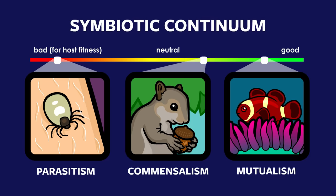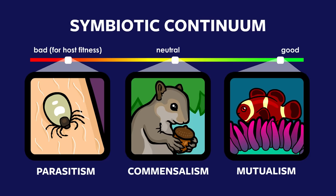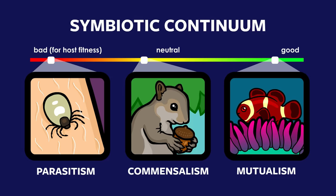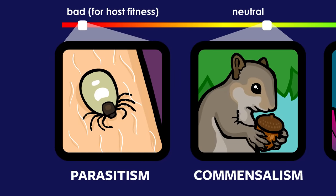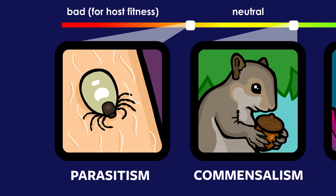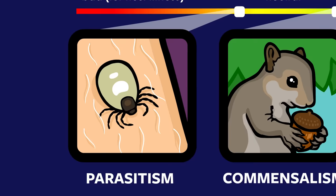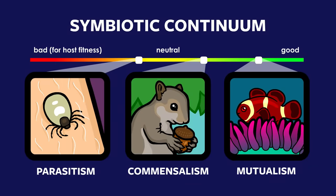Here we see that there exists a symbiotic continuum from parasite to mutualist. Symbiotic relationships can and do change dramatically over time. Even ticks, which almost all of us consider to be horrible parasites, when they're not carrying diseases, sometimes act more like commensalists than parasites. Due to their small size, they take very little blood from their donors, meaning that a single tick won't usually cause a noteworthy fitness decline in its host.